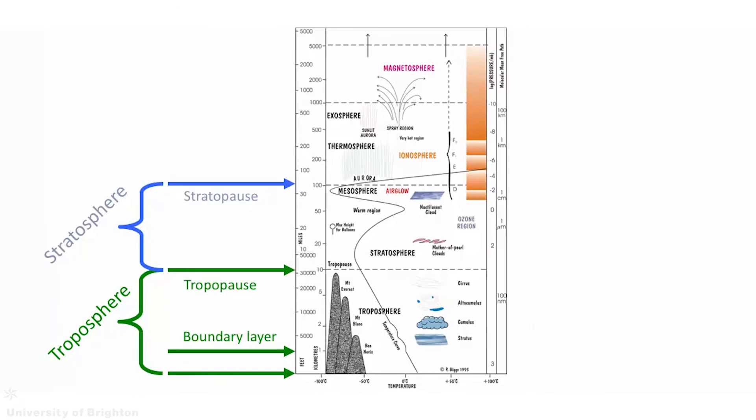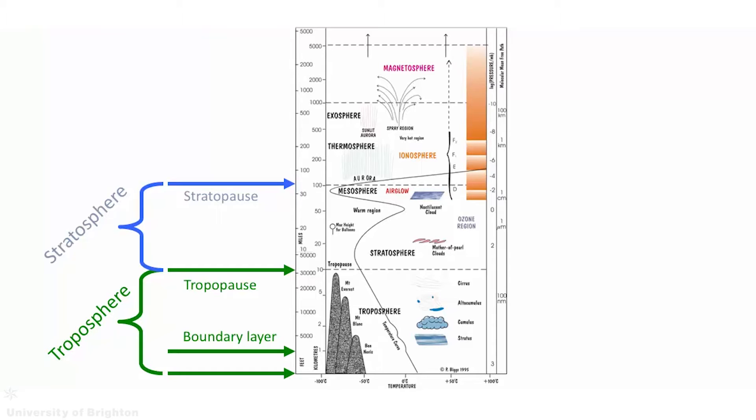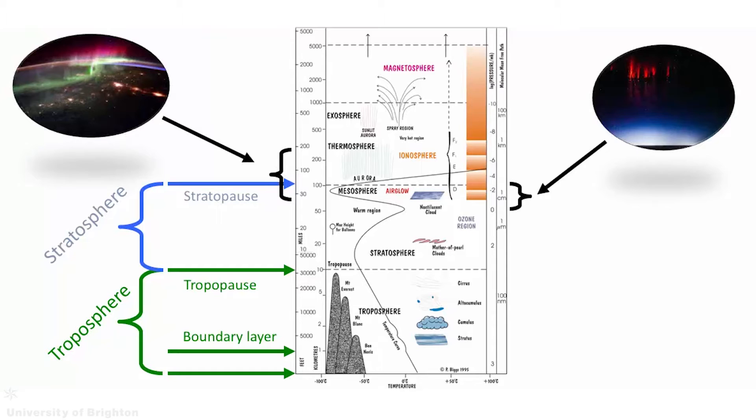Above the stratosphere, we find the upper atmosphere — the mesosphere, thermosphere and exosphere — where dramatic phenomena such as the aurora and upper atmospheric lightning play out. Interestingly, 99% of the mass of the atmosphere exists below the middle of the stratosphere, with atmospheric pressure decreasing in a rapid, non-linear manner with altitude.